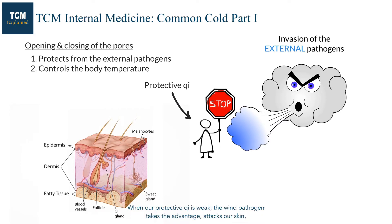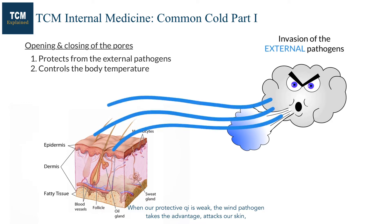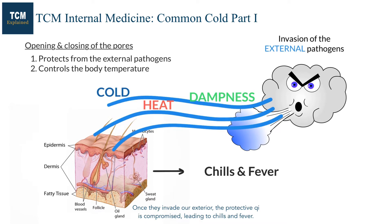When our protective Qi is weak, the wind pathogen takes advantage and attacks our skin, even bringing other external pathogens along with it, such as cold, heat, or dampness. Once they invade our exterior, the protective Qi is compromised, leading to chills and fever. So the presence of chills and fever shows that wind has invaded the exterior.